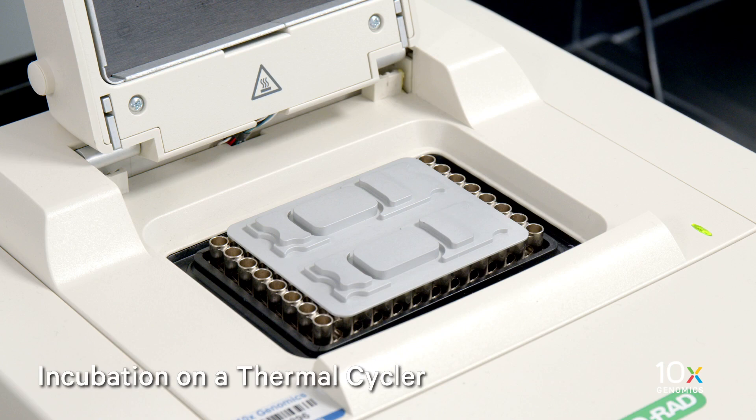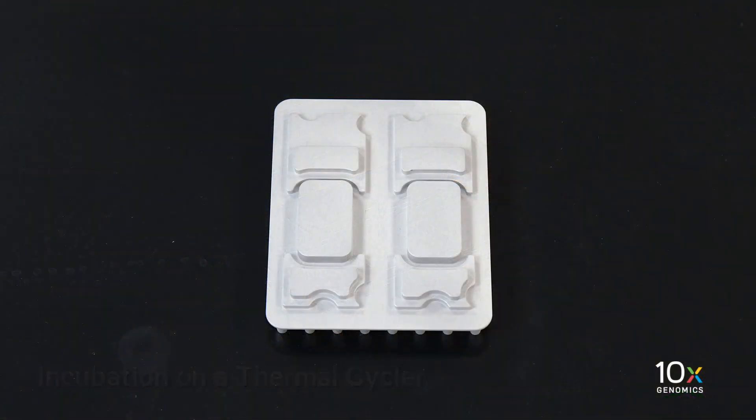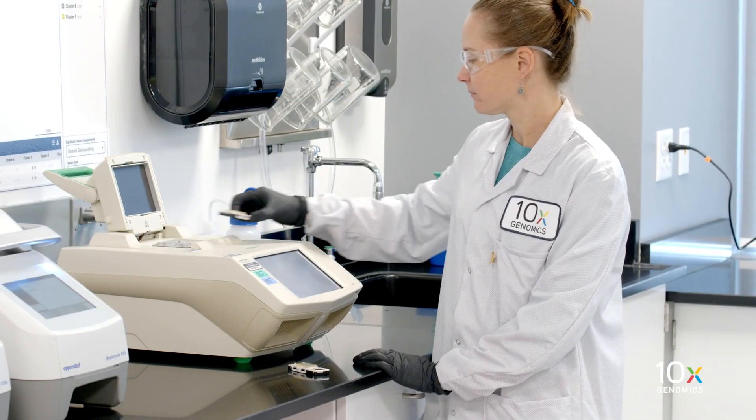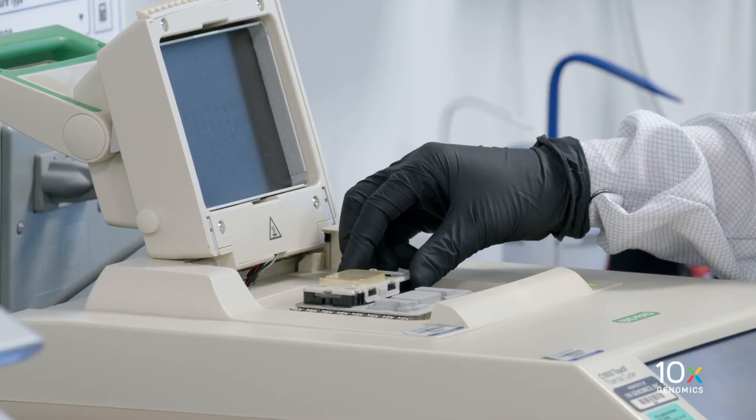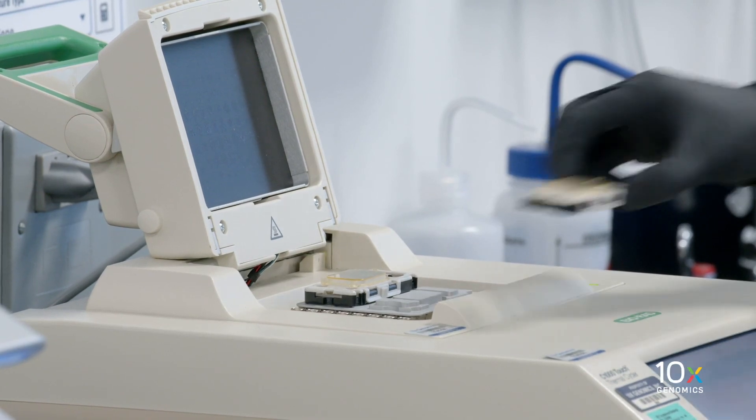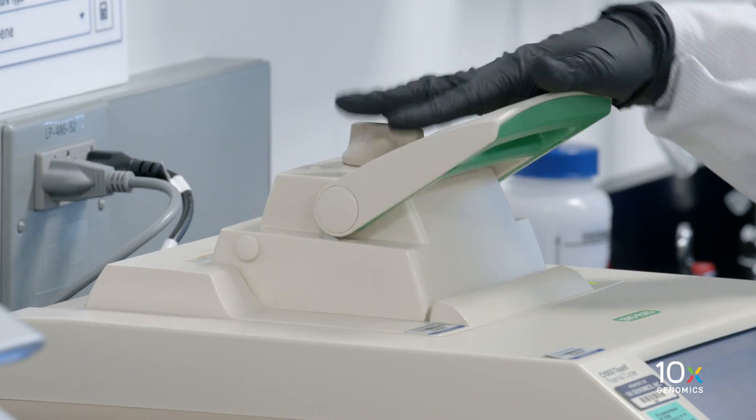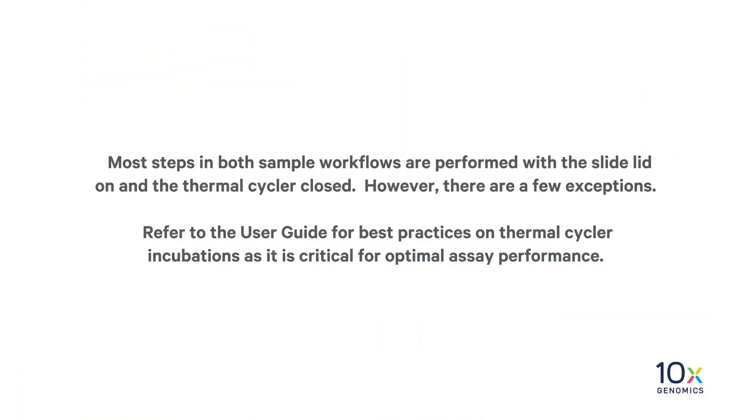Next, we will demonstrate incubation on a thermal cycler. The assay workflow requires multiple incubations on a thermal cycler using a Xenium specific thermocycler adapter. Place the sealed slide cassette on the thermocycler adapter, then close the lid and follow the incubation protocol in the user guide. Most steps in both sample workflows are performed with the slide lid on and the thermal cycler closed. However, there are a few exceptions. Refer to the user guide for best practices on thermal cycler incubations as it is critical for optimal assay performance.